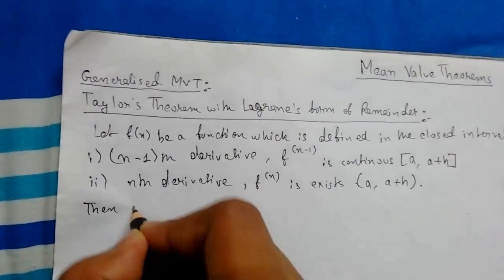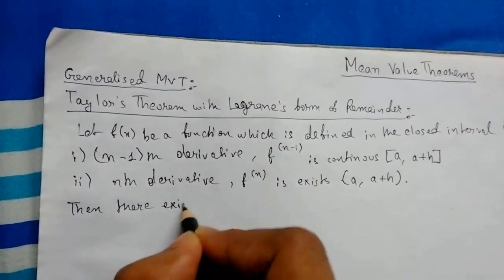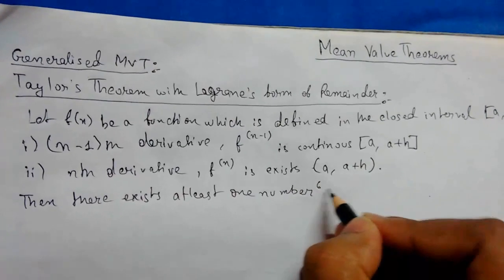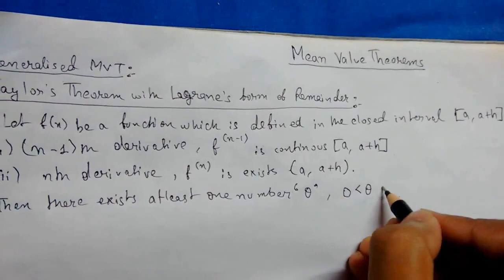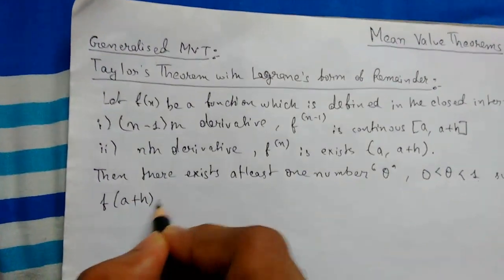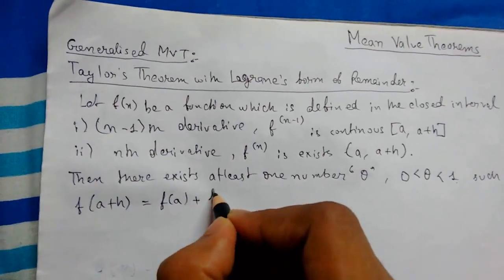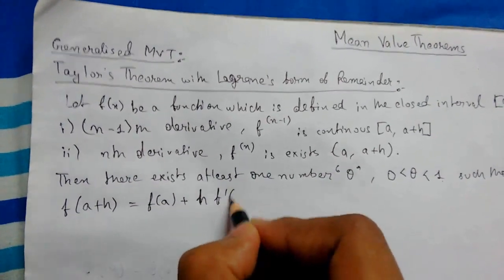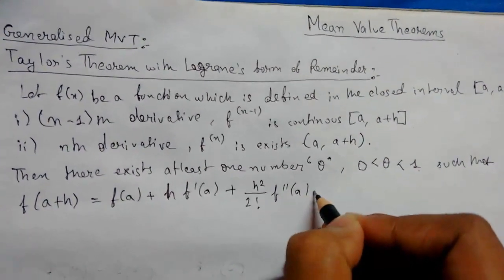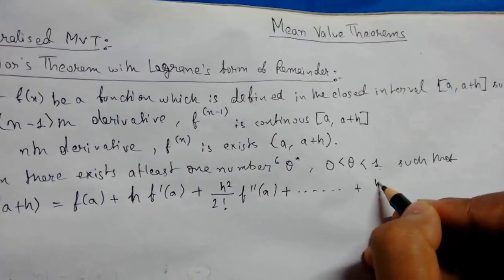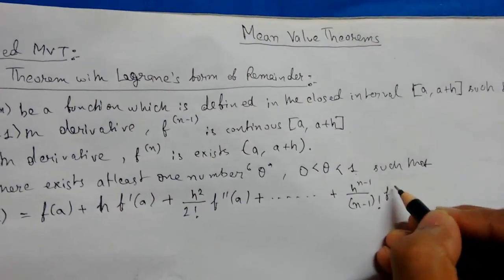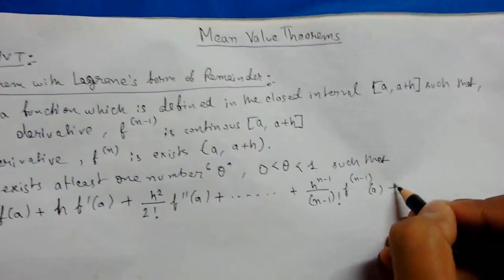Then there exists at least one number θ where 0 < θ < 1, such that f(a+h) equals f(a) plus h times f'(a) plus h²/2! f''(a) plus up to h^(n-1)/(n-1)! f^(n-1)(a) plus R_n.